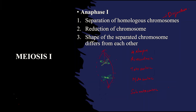In acrocentric, the chromosome will be looking like this. In telocentric, it has one arm. In metacentric and finally submetacentric, the shapes differ accordingly. These are the shapes of chromosomes depending upon the centromere present in the chromosome.